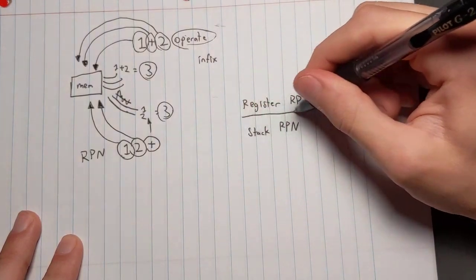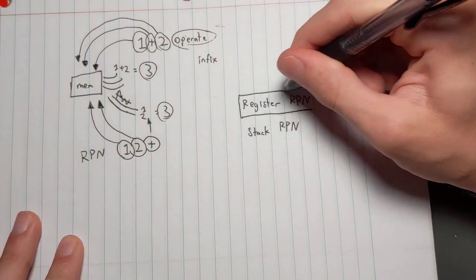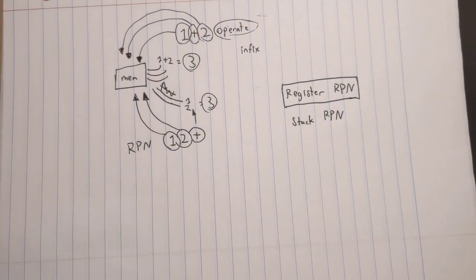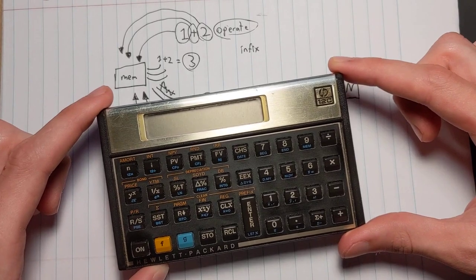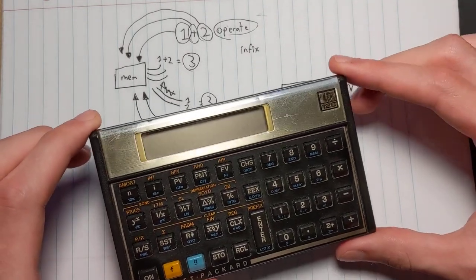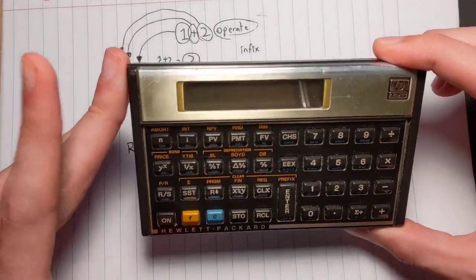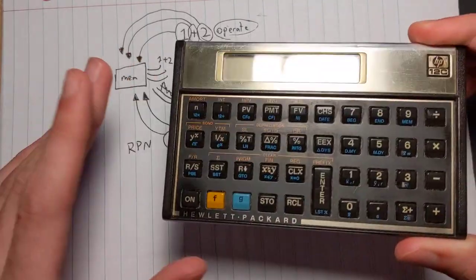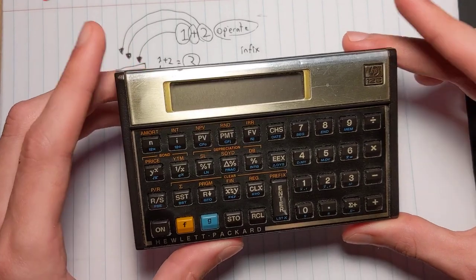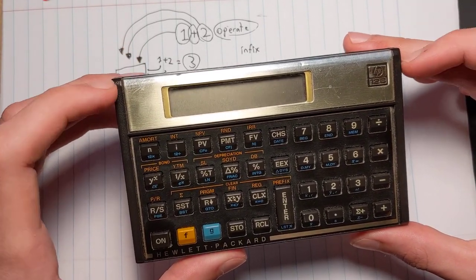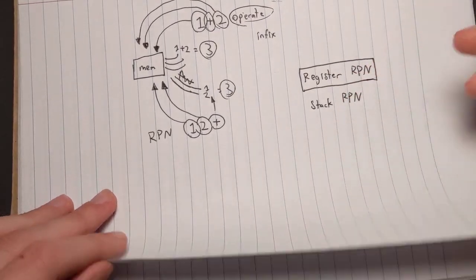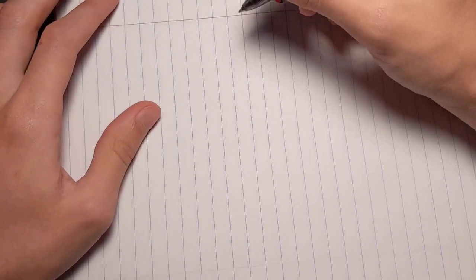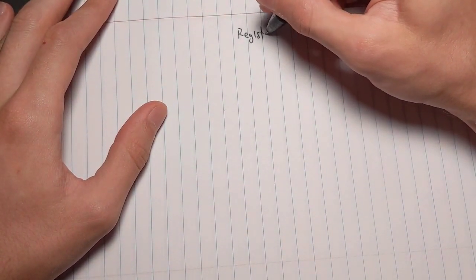I'm going to show you an example of Register RPN first. I have this calculator right here called the HP-12C. The HP-12C is actually pretty special because it has barely any memory at all — I don't even remember if it has a kilobyte. The designers knew this, so they designed it to work with RPN. Here is how Register RPN works on the HP-12C.